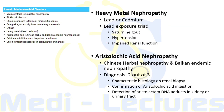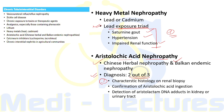Heavy metals such as lead or cadmium can lead to chronic tubular interstitial process after prolonged exposure, though these are less common now due to reduced exposure. Lead exposure presents with a triad of saturnine gout, hypertension, and impaired renal function. Two seemingly unrelated conditions — Chinese herbal nephropathy and Balkan endemic nephropathy — have been linked by the etiologic agent aristolochic acid, now collectively termed aristolochic acid nephropathy. Diagnosis requires two of three criteria: characteristic histology on renal biopsy, confirmation of aristolochic acid ingestion, and detection of aristolactam DNA adducts in kidney or urinary tract.